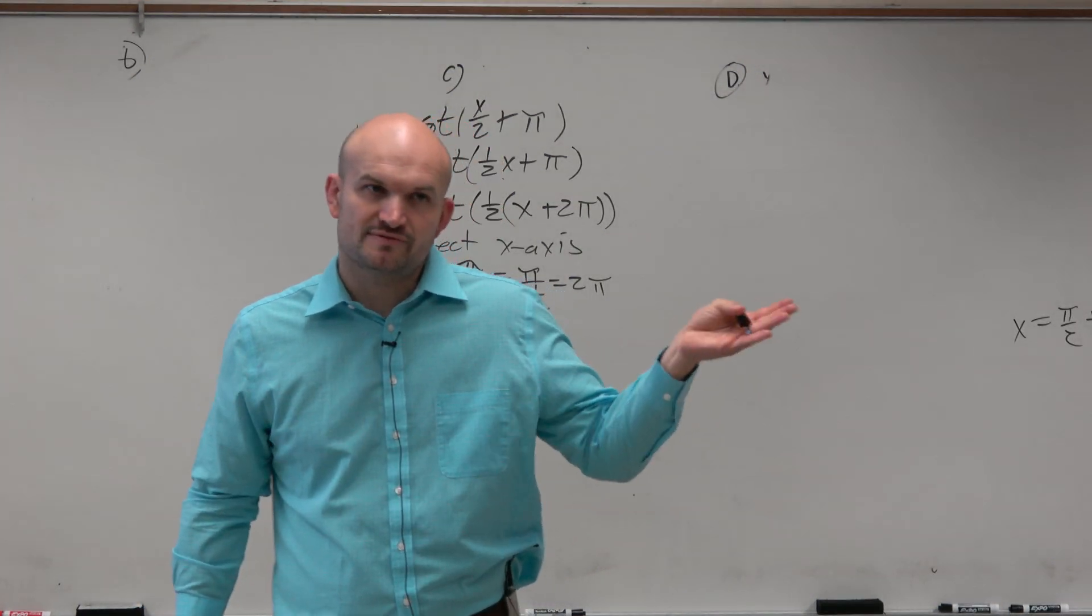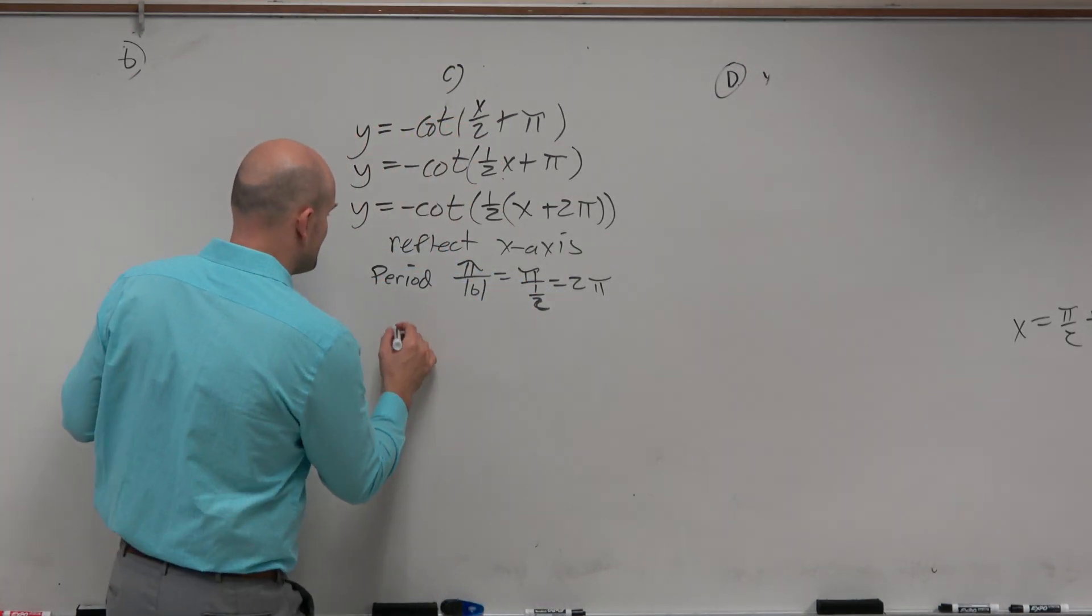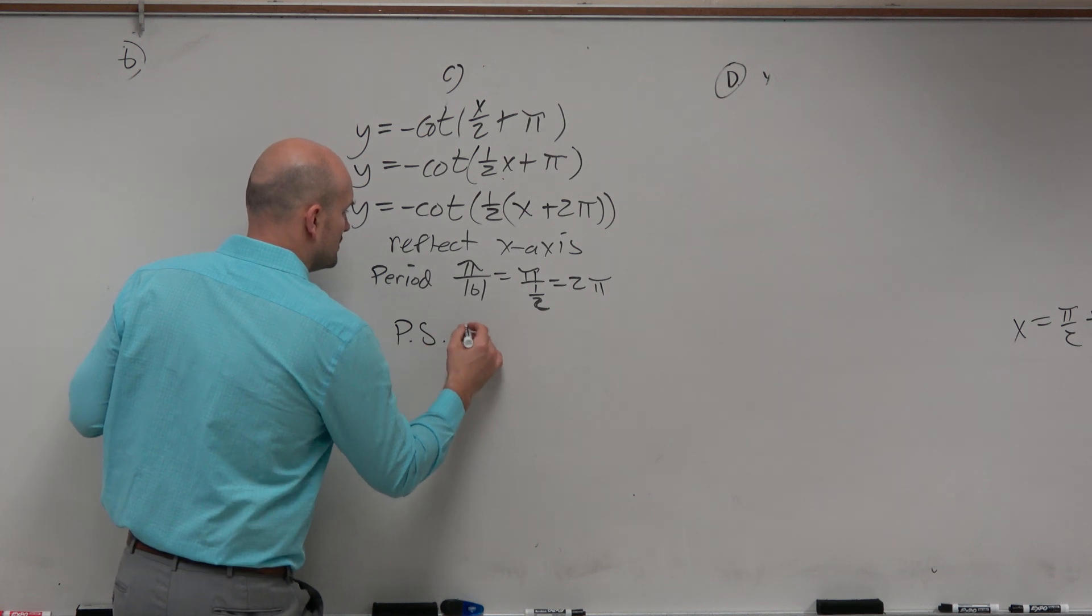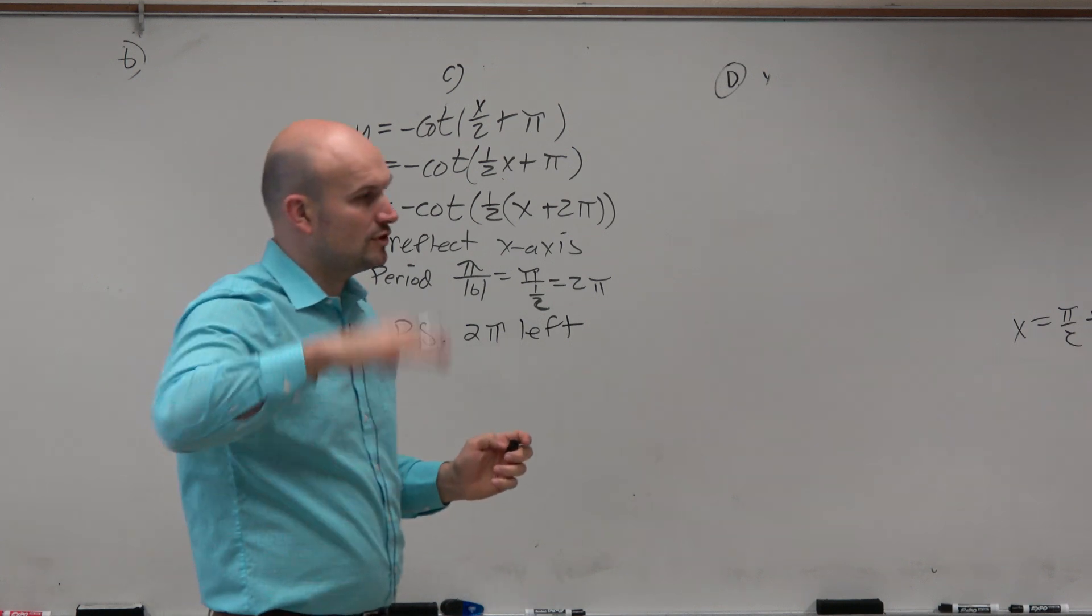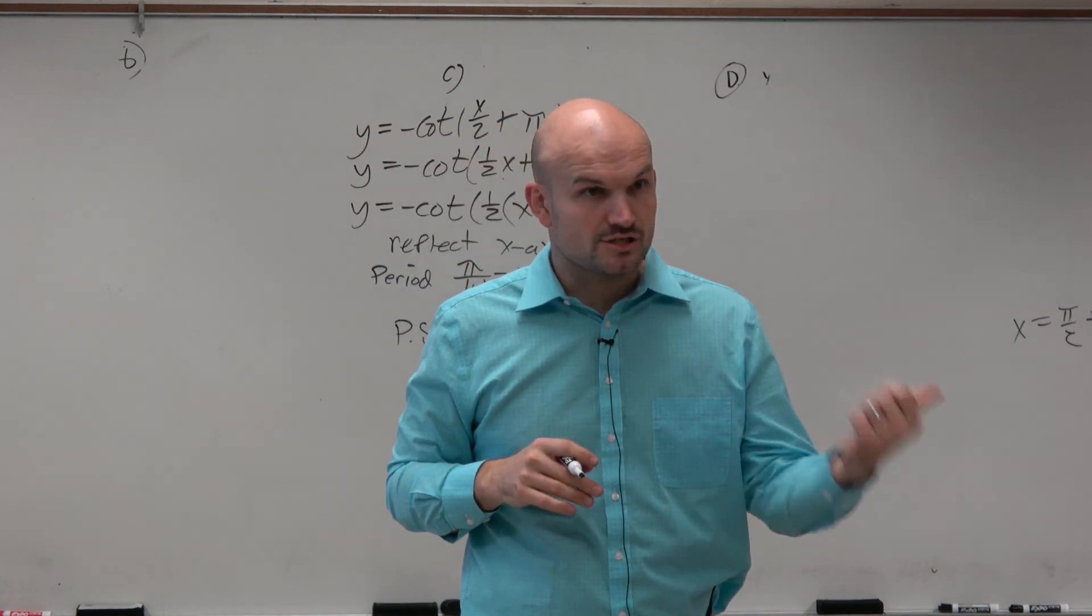And then I can see that the graph is also being shifted 2 pi to the left. So that is a phase shift 2 pi left or left 2 pi. And there's no D, no vertical shift up or down.